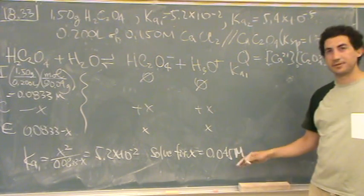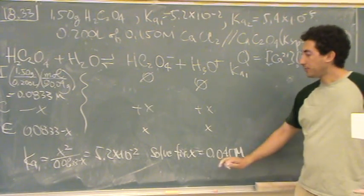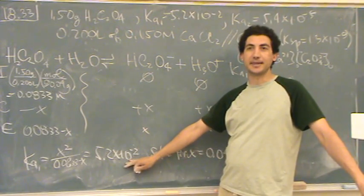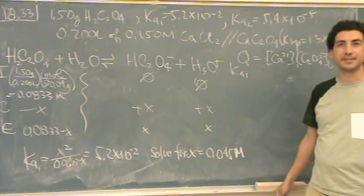Yeah, you wouldn't be able to use the assumption here. So whenever you see a k that is not that tiny, the assumption won't work. They had to use the quadratic to solve this value, unfortunately.